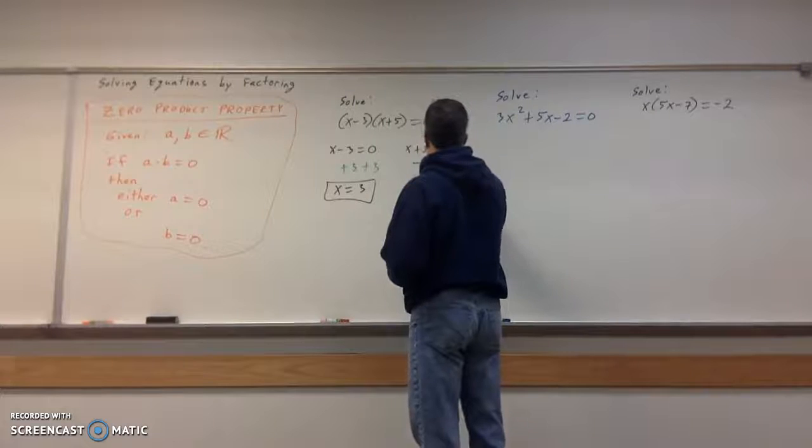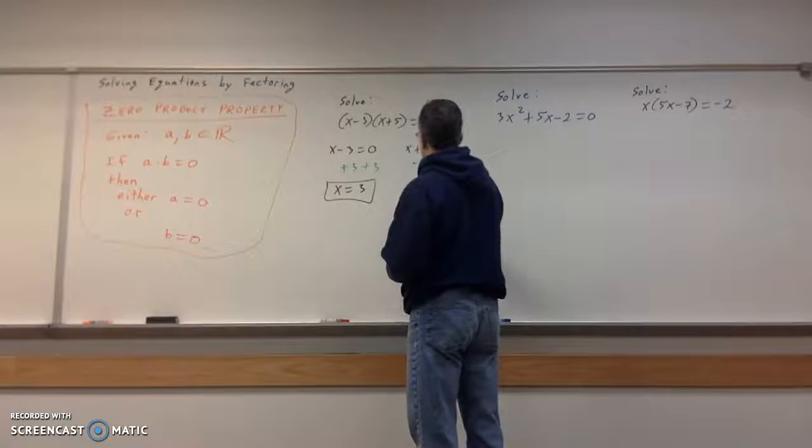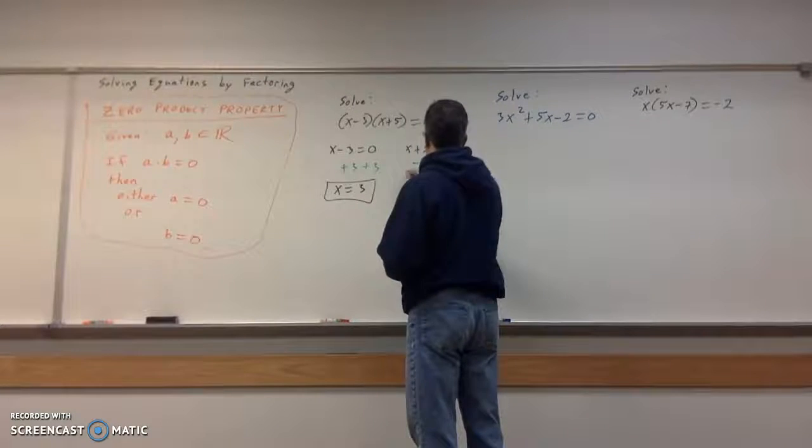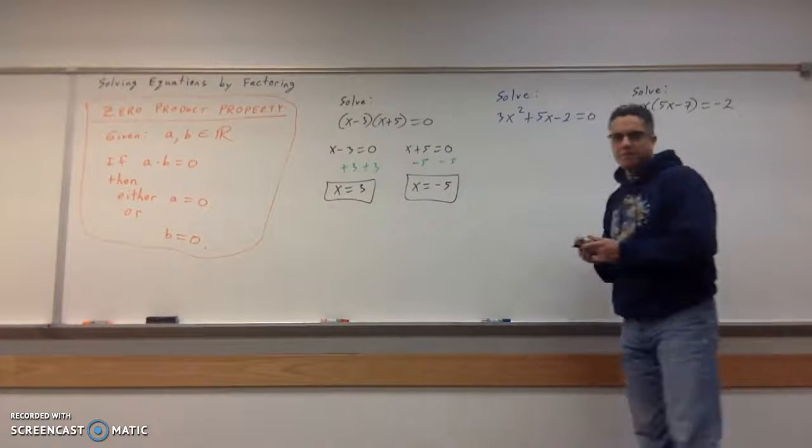And over here, we'll subtract five to both sides. So x equals negative five is the other solution. And that one's done.